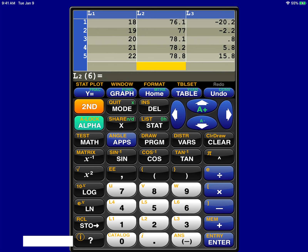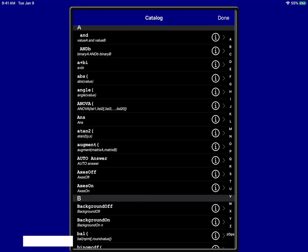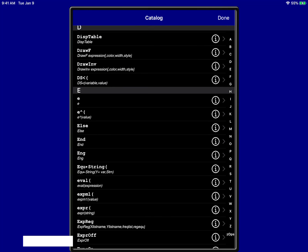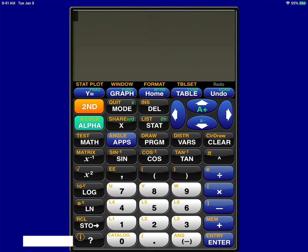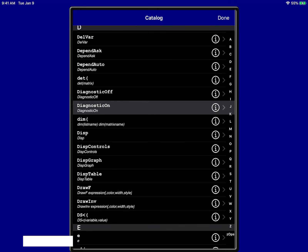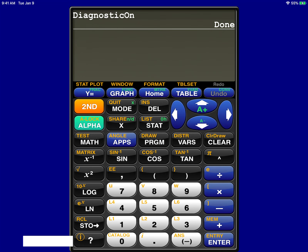Then I'm going to enter 76.1, 77, 78.1, 78.2, and 78.8. Remember from lesson 2.4, we talked about how you need to first do the diagnostic. Make sure that is on. So the calculator commands for that are second zero to get the catalog, and you want to look for diagnostic on. Now it's on.